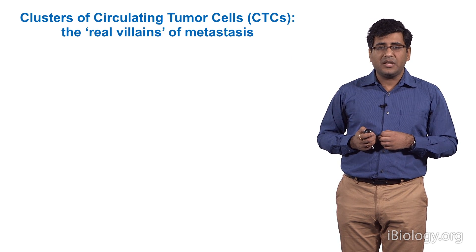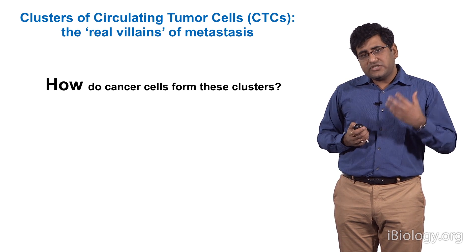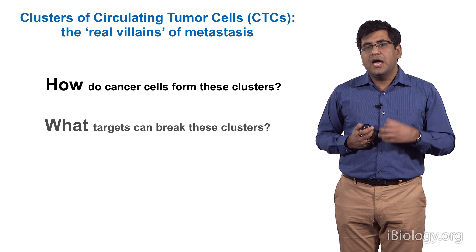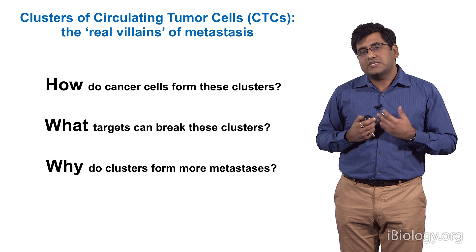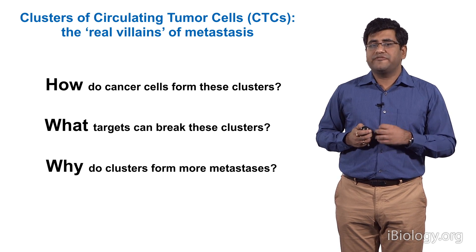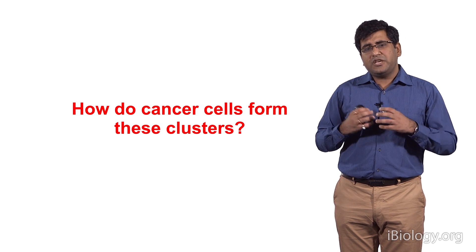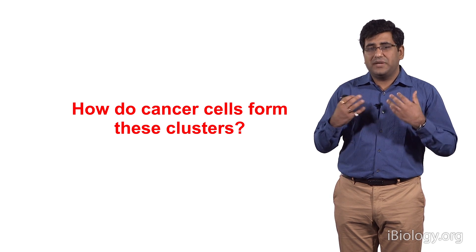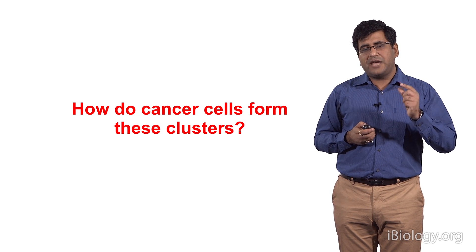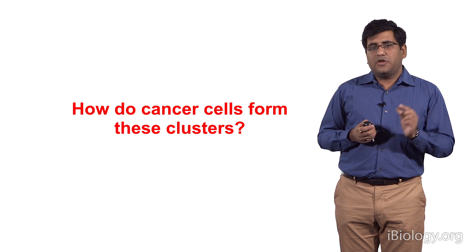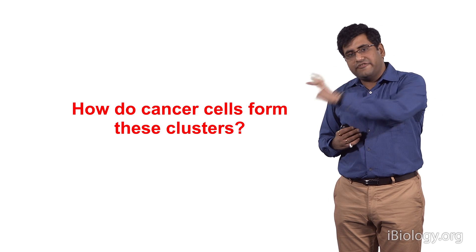If these clusters are the real villains of metastasis, let's understand how cancer cells form them, how we can break them, what targets we can use, and why they form much more metastasis. Let me give you a detailed understanding of how metastasis actually happens. Consider primary lung cancer cells — they do not have the innate property to move. In order to get on the freeway, they need to do two things: break their bonds with their neighbors, the tight cell adhesion they have, and at the same time gain the property to migrate and invade.